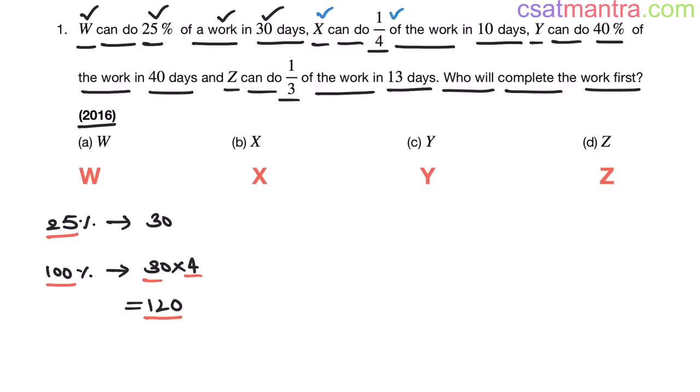Now X can do 1/4th of the work in 10 days. 1/4th of the work in 10 days, so 1 will be in 4 into 10 days my friends, that is equal to 40 days. I made this 1/4 as 1 by multiplying 4, so I have to multiply with 4 on this side also. So 4 into 10 is 40.